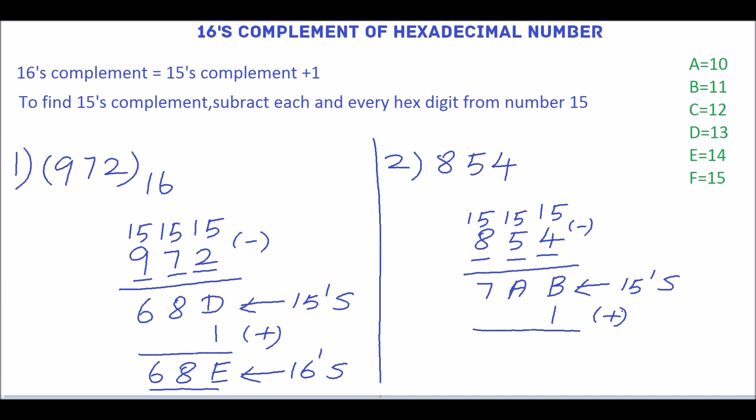equivalent to 11. 11 plus 1 is 12, so 12 is equivalent to C. A, 7, so 7AC is the 16's complement